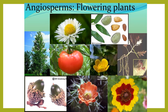Angiosperms are all around us — about 85% of the plants in the world are angiosperms. For example, the oak tree, which makes the acorn, is a flowering plant. Tomatoes, cucumbers, and everything you eat — except for pine nuts — come from angiosperms, which are flowering plants.